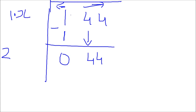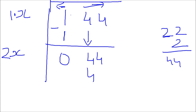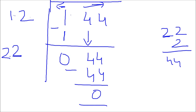Now guess any number X such that X multiplied with 2X gives an answer less than or equal to 44. If I guess X to be 2, that makes 22, and 22 times 2 gives 44 — perfect. Subtracting gives remainder 0. Placing 2 in the answer and replacing X, the square root of 1.44 is 1.2.